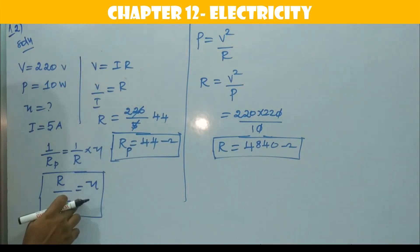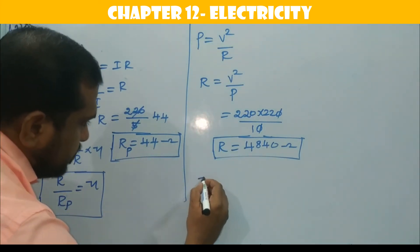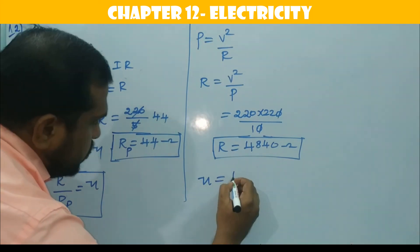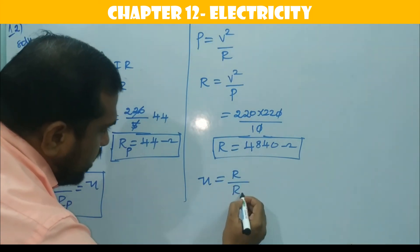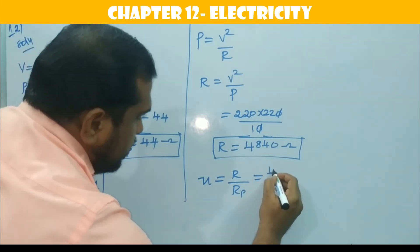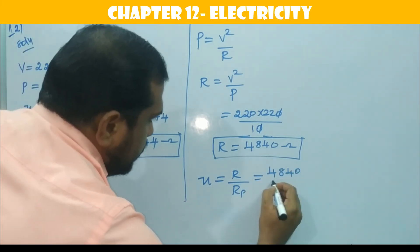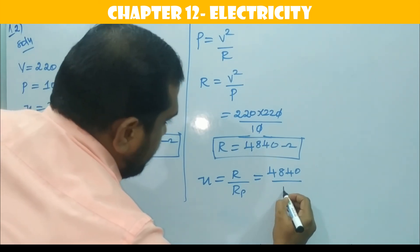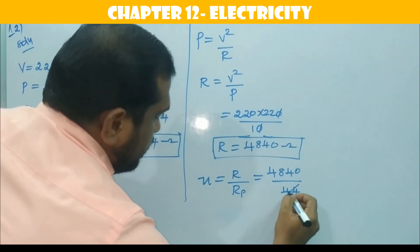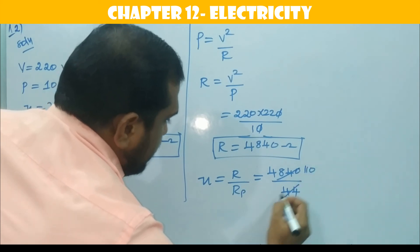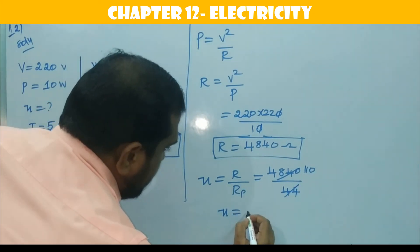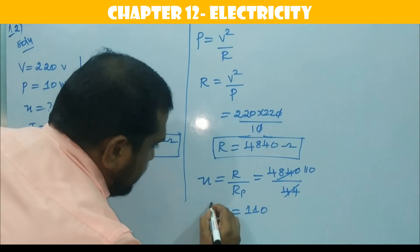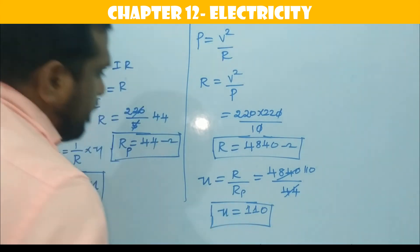Now we get R and Rp value. Then substitute here. We will get answer. N is equal to R by R equivalent in parallel. What is R here? 4840 by R value is 44. 110. So, number of bulbs required is 110. That is the answer.